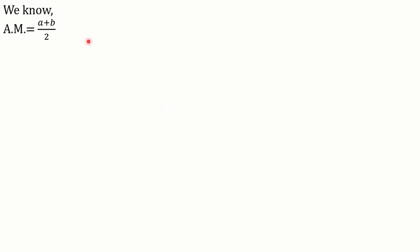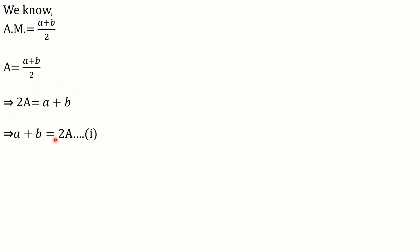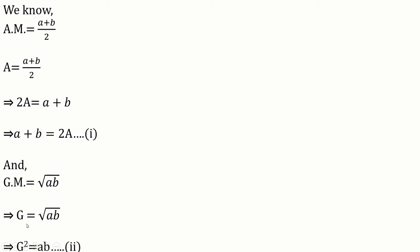Now, we know the arithmetic mean is given by (a + b) / 2. The arithmetic mean as per the question is capital A, so by cross multiplication, a + b = 2A — let's call this equation 1. Again, the geometric mean is √(ab), and as per the question G = √(ab). On squaring both sides, we get G² = ab — let's call this equation 2.